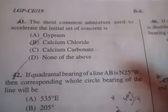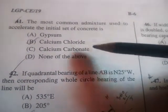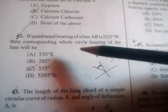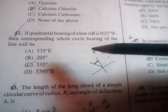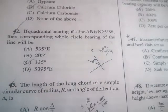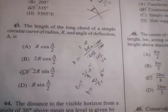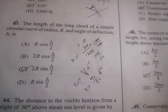Next question: the most common admixture used to accelerate the initial set of concrete is calcium chloride. Next question: if the quadrantal bearing of a line AB is N 25° W, then the corresponding whole circle bearing will be C: 335°.